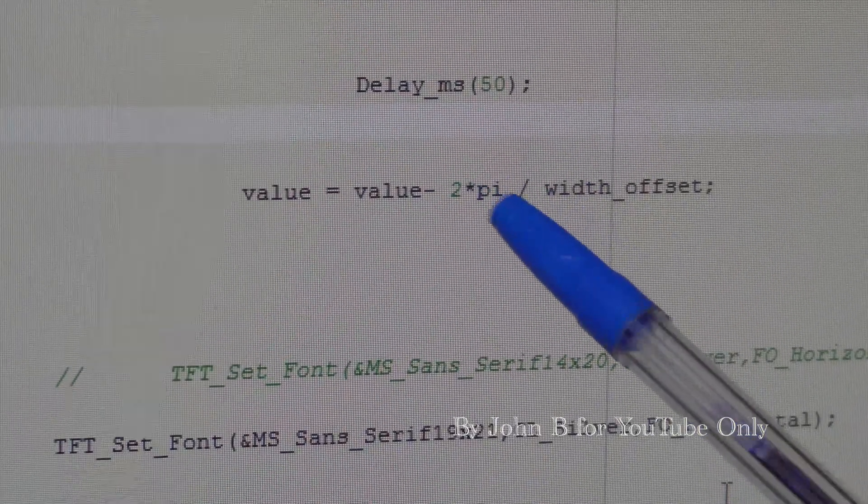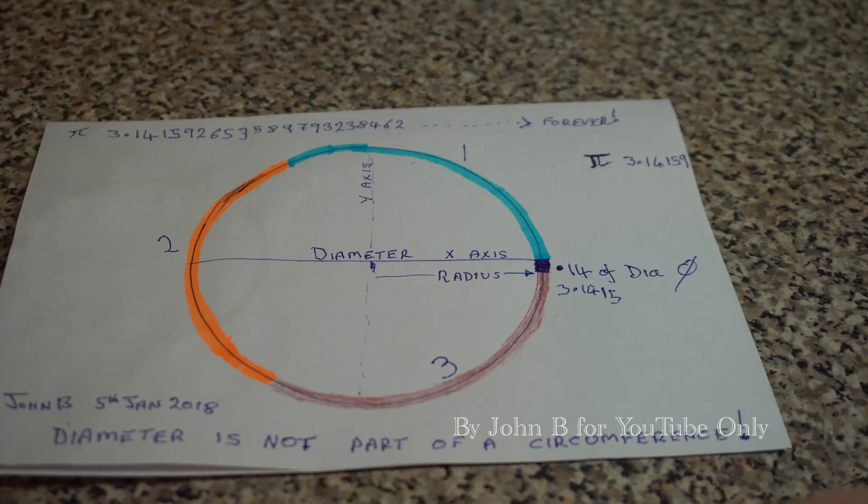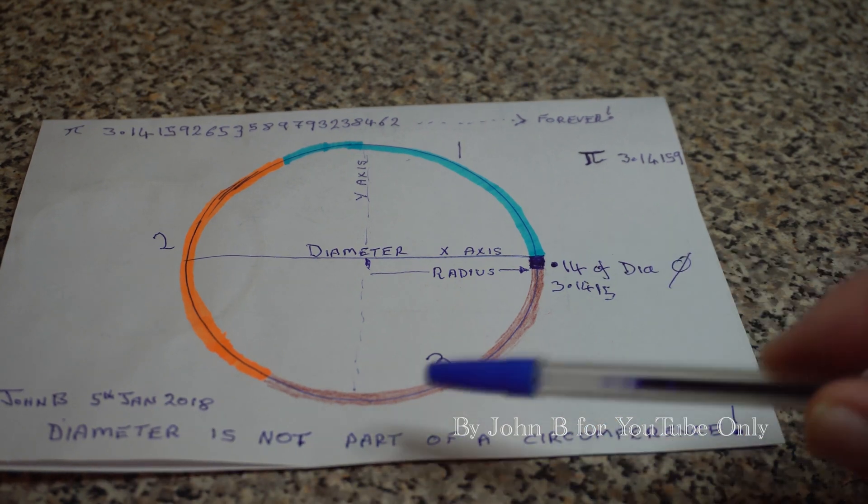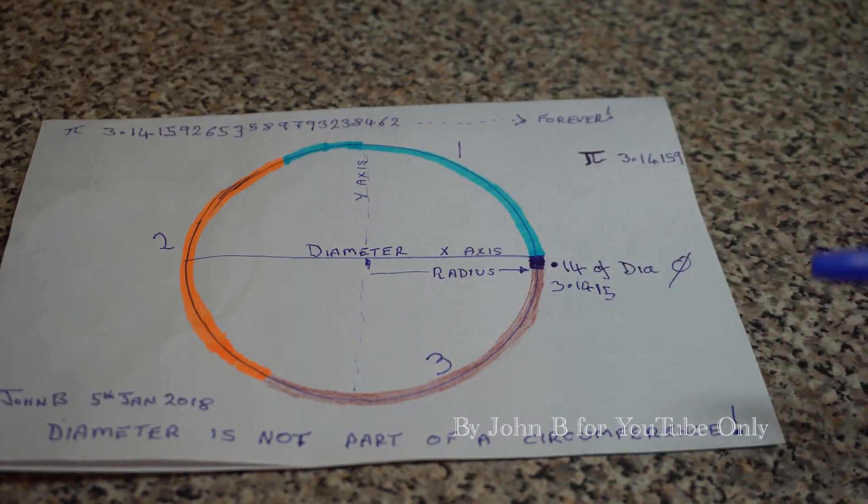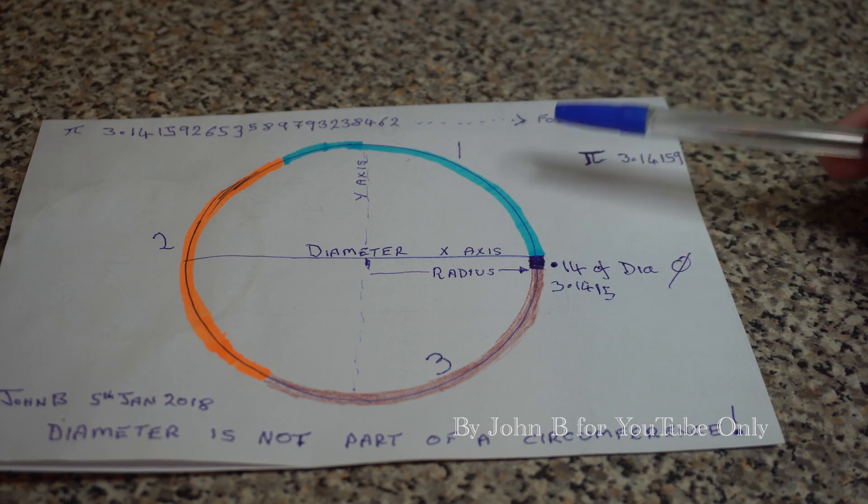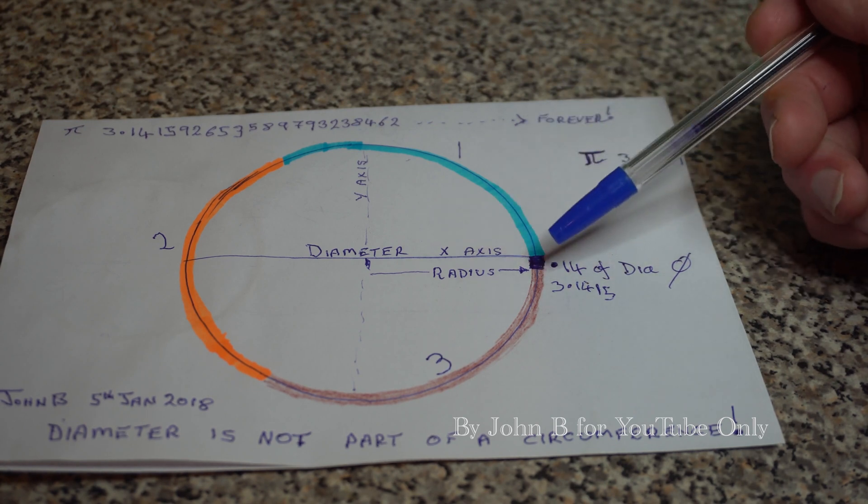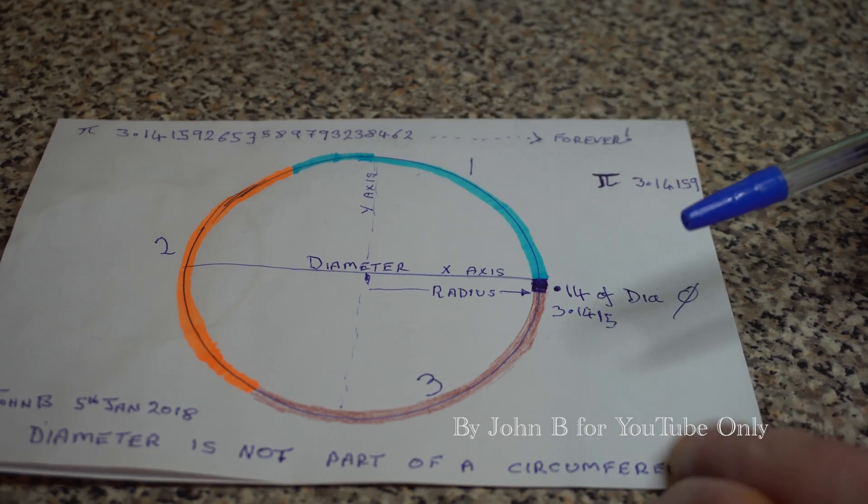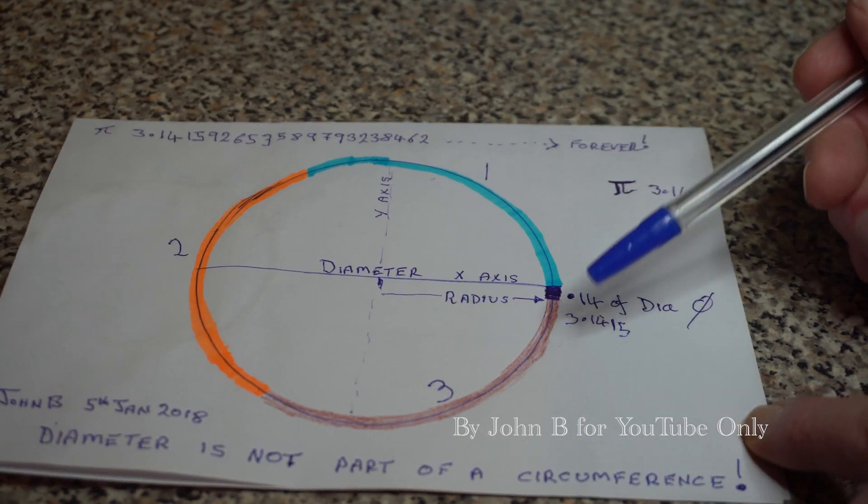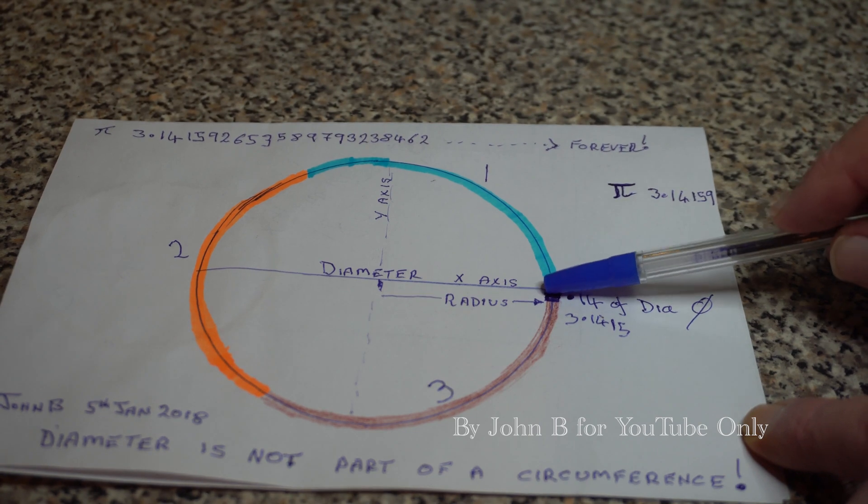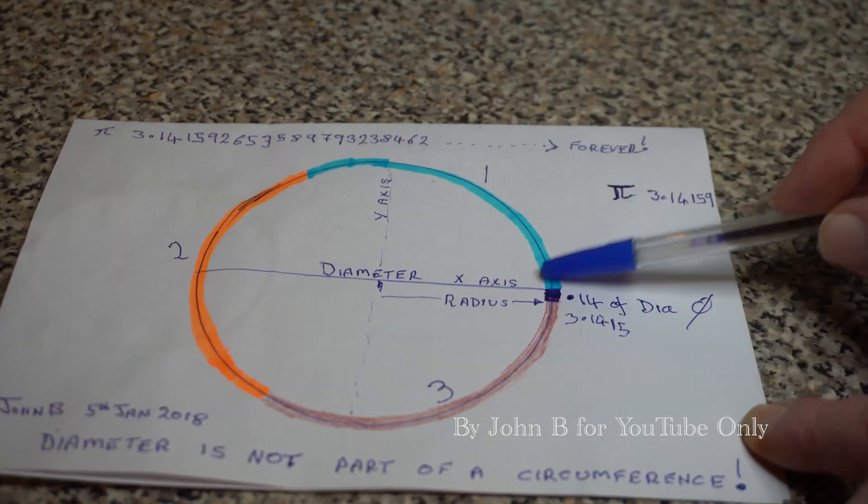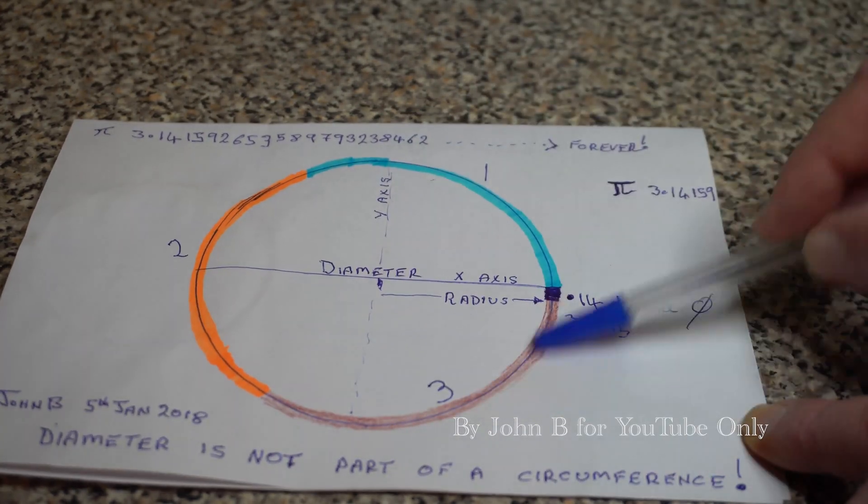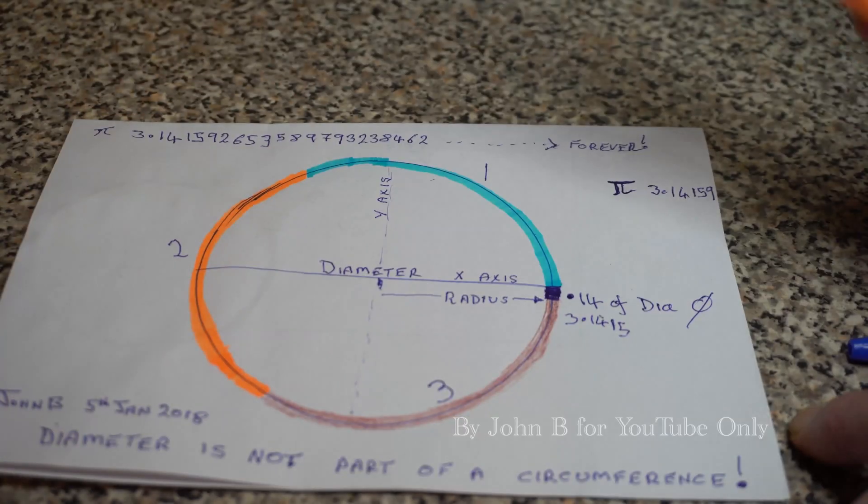My conclusion is the diameter cuts a circle in half or cuts a circumference in half, but is not part of the circumference. It's a bit like saying this pen is equal to 3.14 of the circumference.